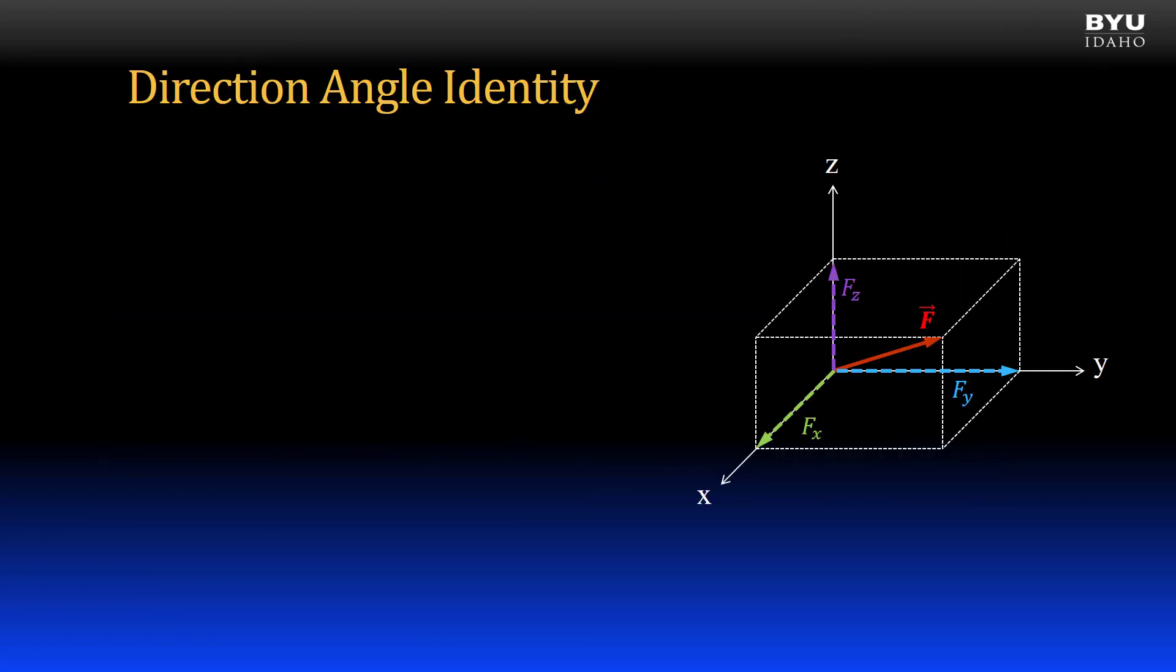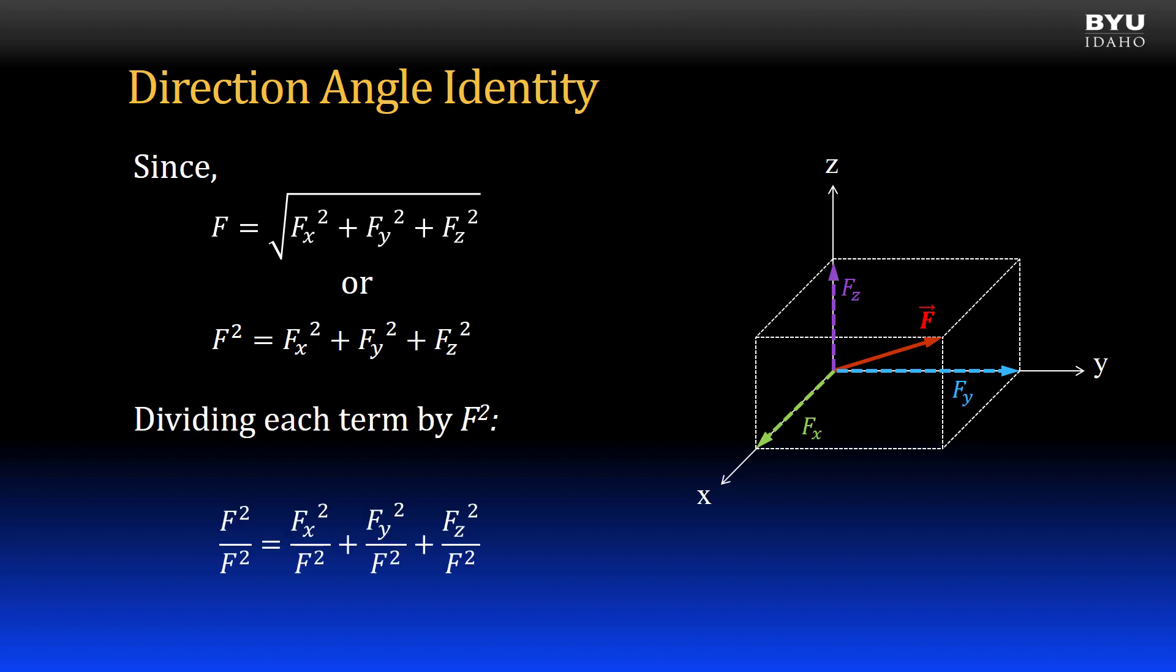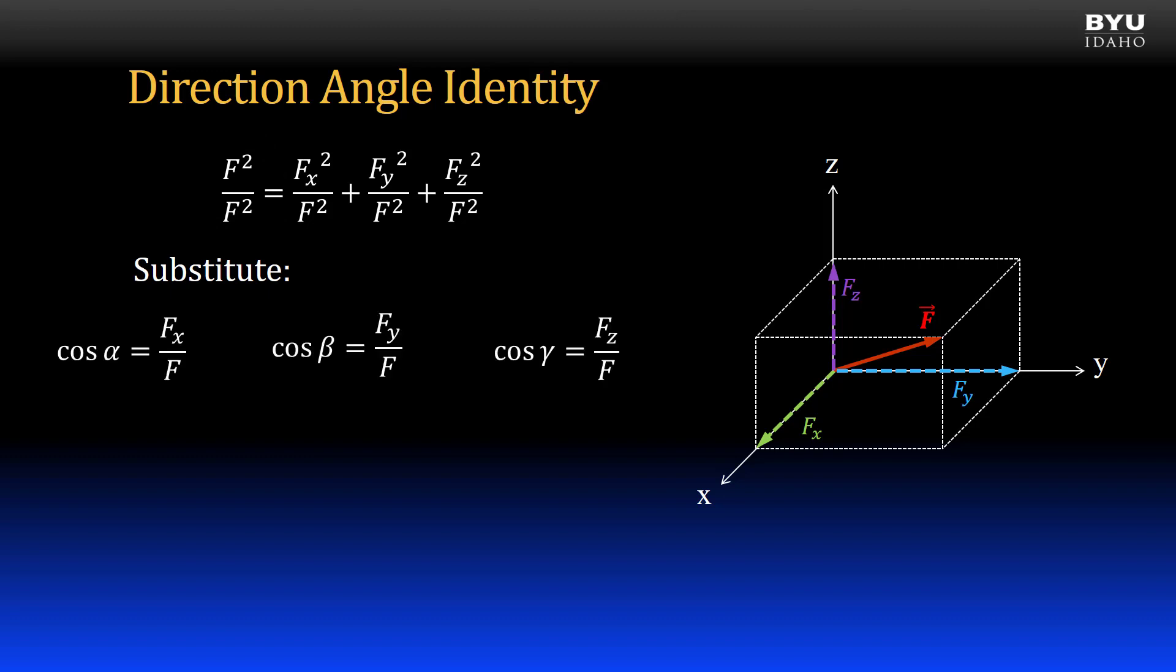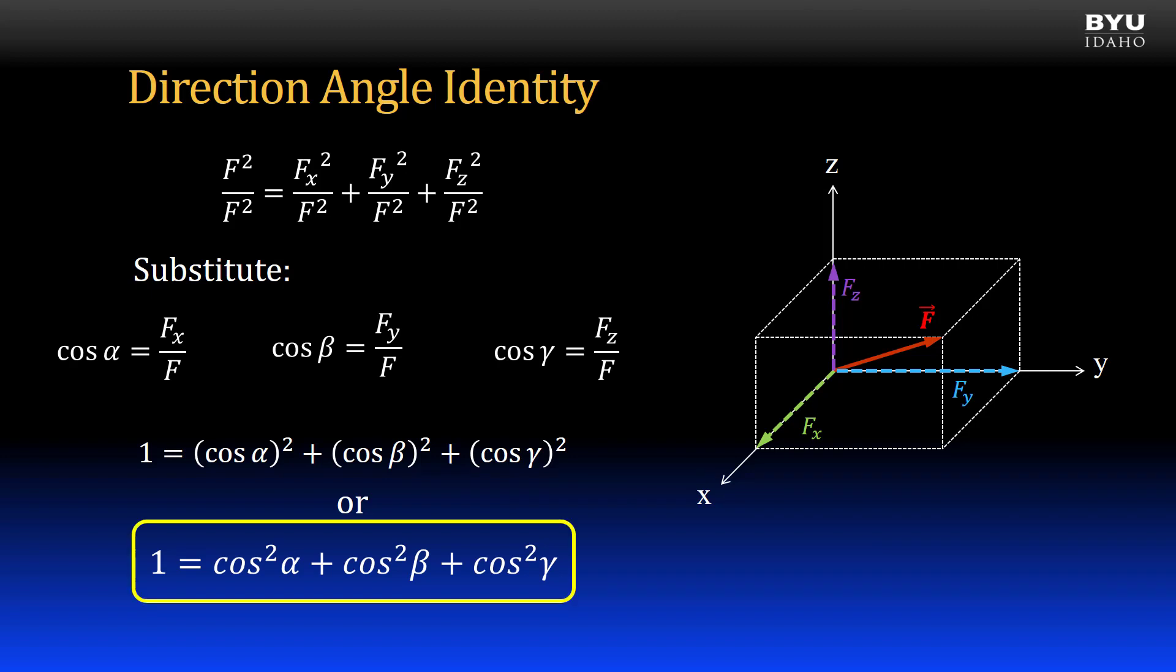Let's now find the direction angle identity, which will be a useful tool for us. Here's the Pythagorean theorem for three dimensions. We can rewrite it in this common form. Now, let's take each term and divide it by f squared. Now the first term is just one. Let's substitute each of the remaining terms with the equivalent cosine expression, previously defined and shown here. We get this identity, which can be rewritten in the more common form as this. This is the direction angle identity.